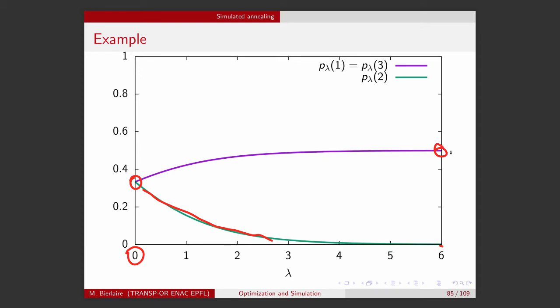Why is this interesting? Assume we are able to draw from this distribution — say for lambda equals six. What we obtain are the optimal solutions, because the suboptimal solutions are associated with a very low probability, close to zero. So the idea is: I have a probability distribution where the mass is concentrated on the optimal solutions. Therefore, if I can draw from it, I will generate optimal solutions. And I know how to draw from complex distributions — that is Metropolis-Hastings. And this is the idea of simulated annealing.